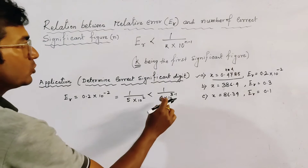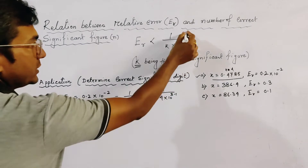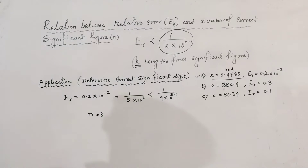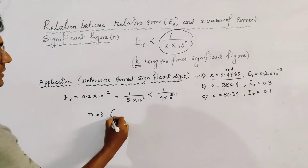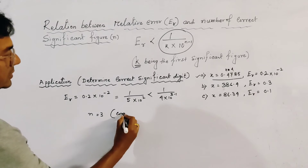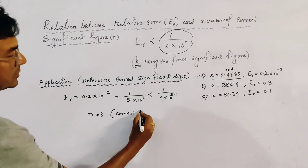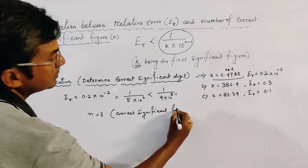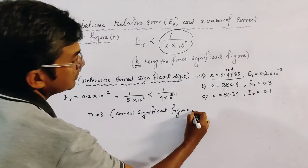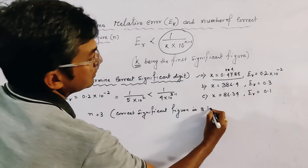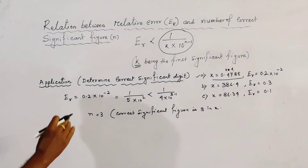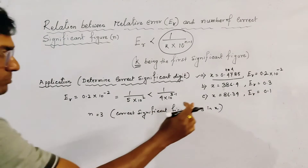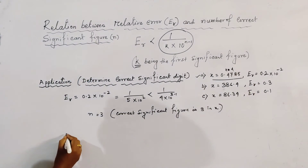Comparing this with the formula result, n is equal to 3. So the correct number of significant figures is 3 — that is the answer to the first problem.